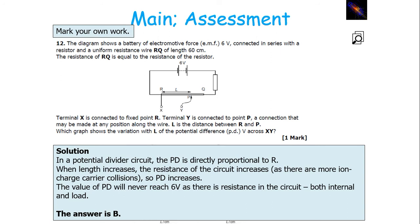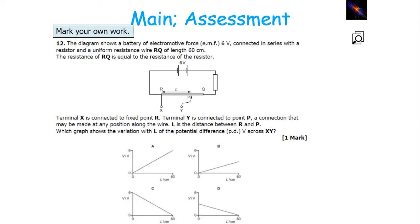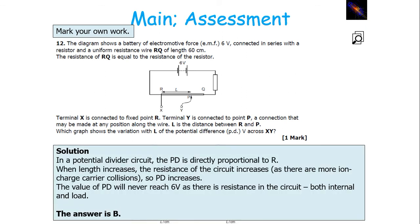In a potential divider circuit, PD is directly proportional to resistance. For a conductor, when the length increases, the resistance increases because there are more ion-charge carrier collisions. Therefore, if PD is directly proportional to R and R increases, PD will increase. The graph must have a positive gradient with positive correlation. The value of PD will never reach 6 volts because there's resistance in the circuit both internally and as a load resistance, so the PD out will never equal the EMF in. The answer has to be B.